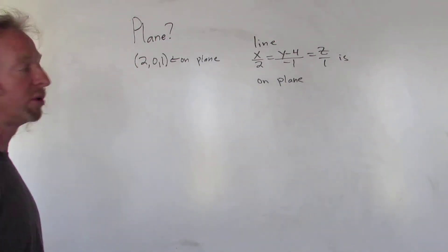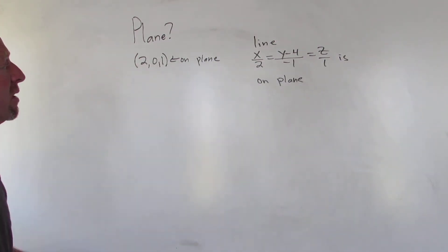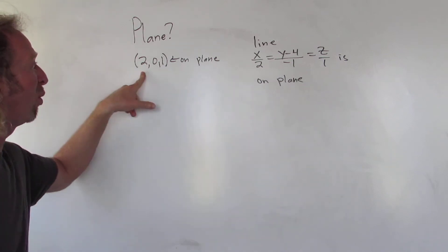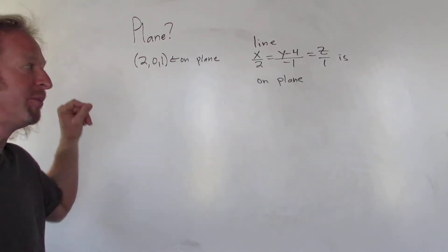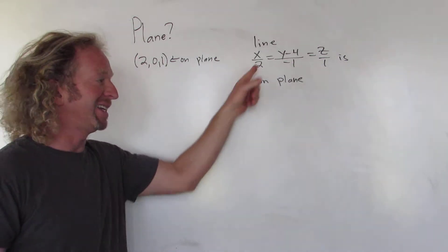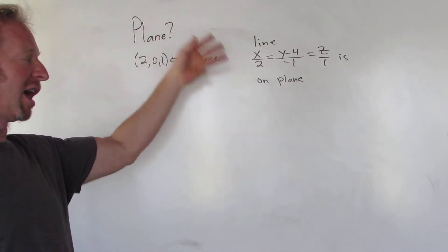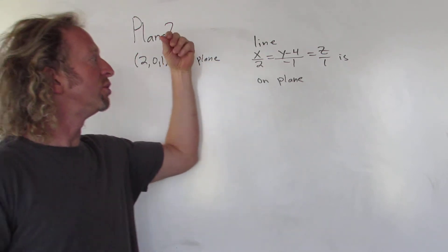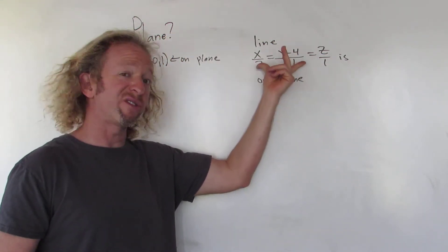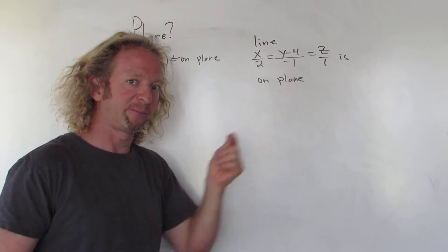Hey everyone. In this video we're looking for the equation of a plane. We're given some information: we're told that this point is on the plane, and we're told that this line is on the plane — in other words, the line whose symmetric equations are these lies on the plane.